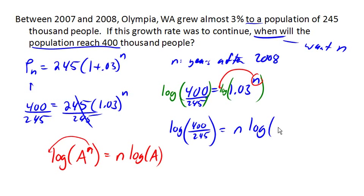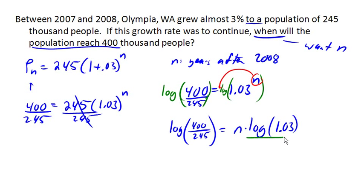Now, instead of n being in the exponent, n is just multiplying this log, which means we can solve for n just by dividing by the log of 1.03. So we're going to divide by the log of 1.03. And there is our answer. n equals that mess there. And you're probably saying, well, that doesn't do me a lot of good. I don't know what the heck that mess is. Okay, you're right.